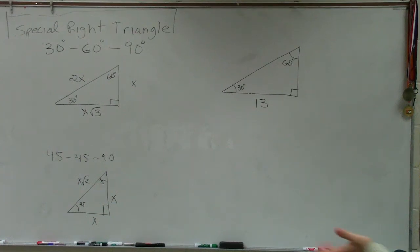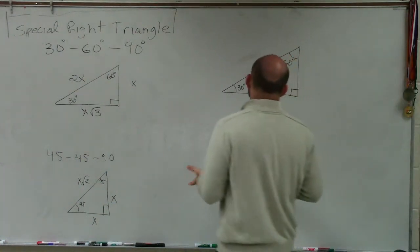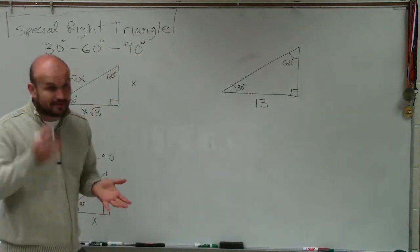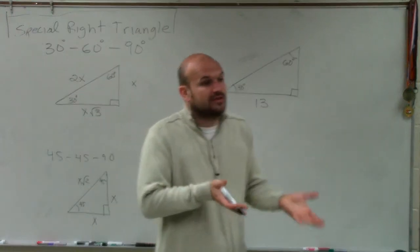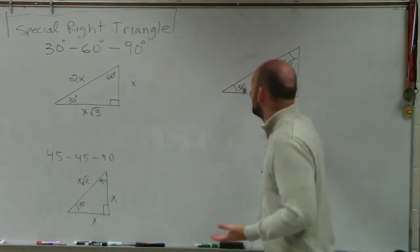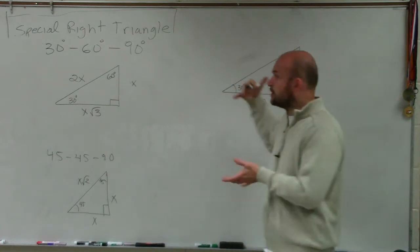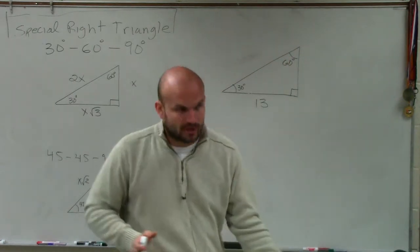So remember guys, when we're looking at this, when we have a 30-60 triangle, what we need to determine is do we have the large length or the—I'm sorry, we first need to always look at, alright, here's the hypotenuse. But do we have the large leg or the smaller leg?